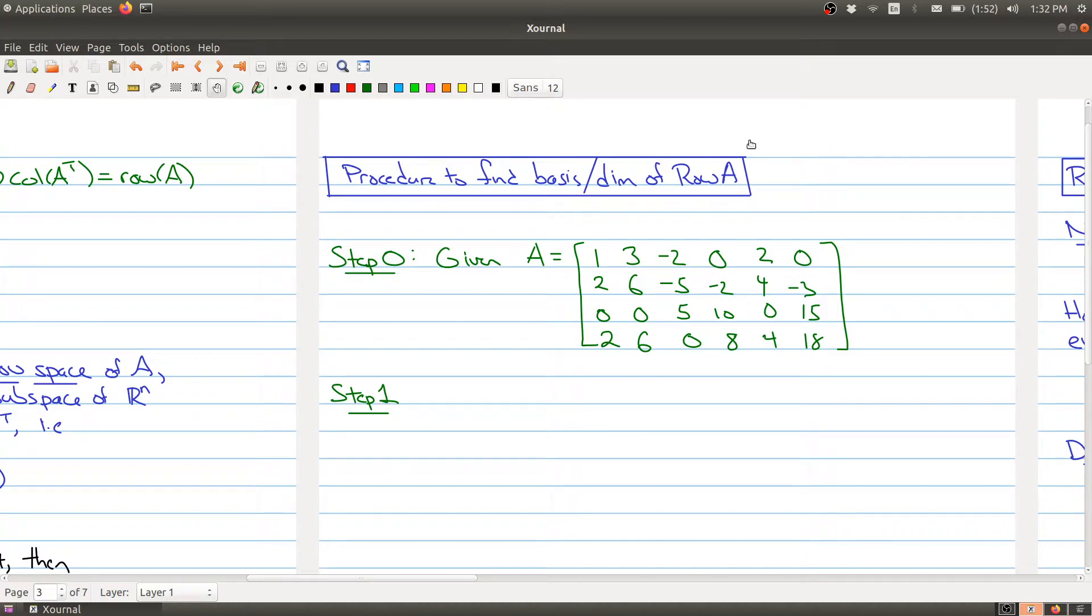Just like in the other two cases, we had a procedure to define both the basis and the dimension. Let's try to do the same thing for the row space of A. I'll break it down by steps. Of course, the first step is somebody has to give you a matrix, and I've already written down the matrix here.